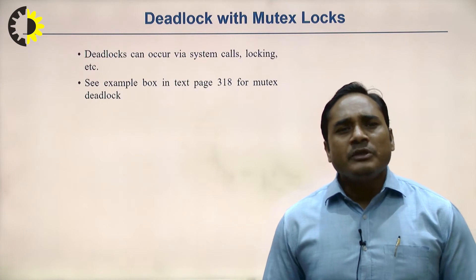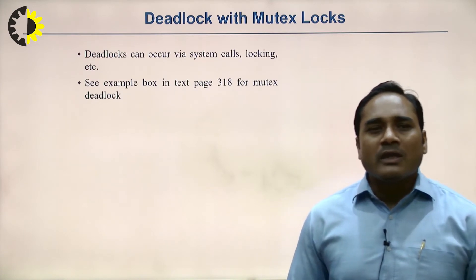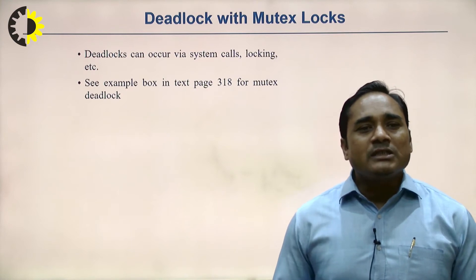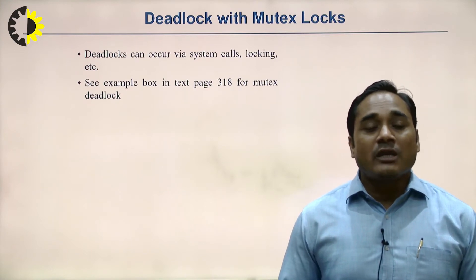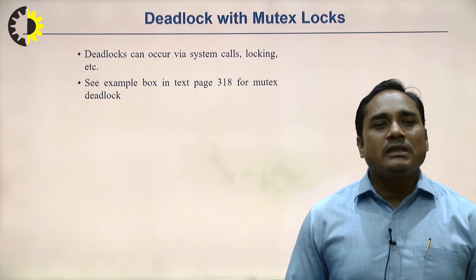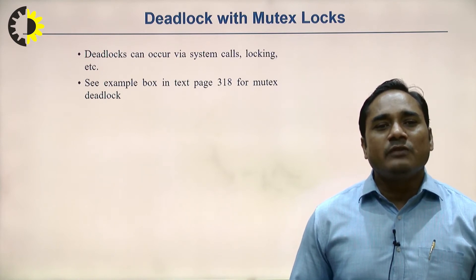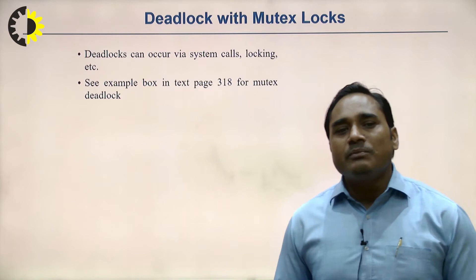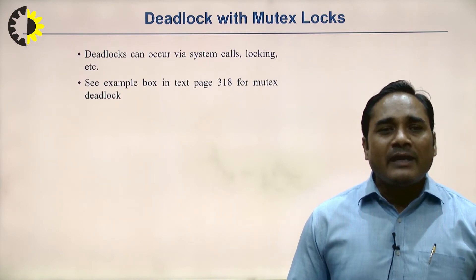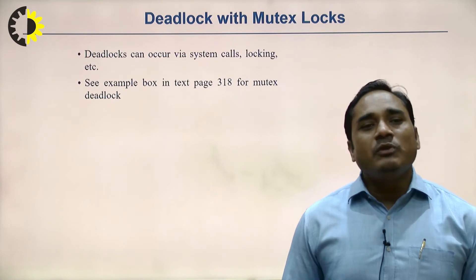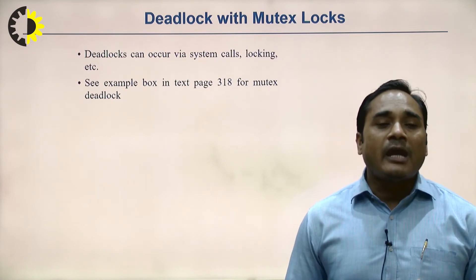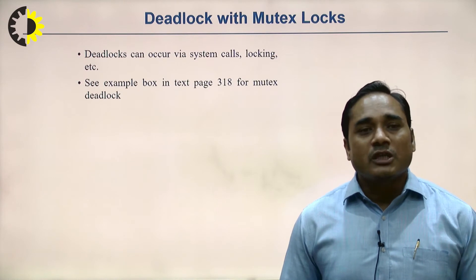Deadlock can also occur with mutex locks during system calls. Deadlock can arise through system calls and locking mechanisms. Mutex means mutual exclusion, so to avoid deadlock using mutex, you must ensure that the four deadlock conditions do not occur simultaneously.